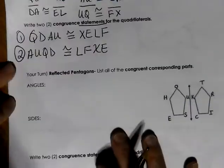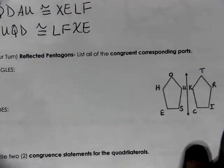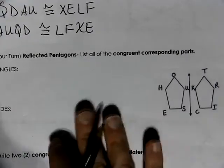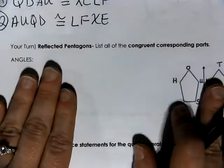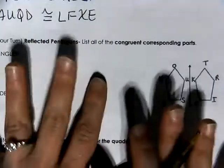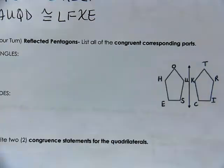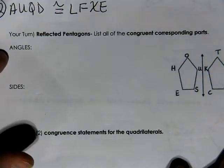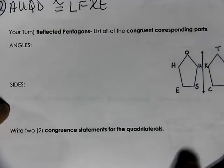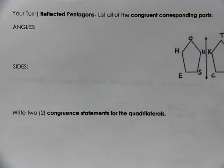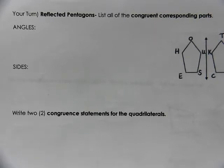Now it's your turn. We have reflected pentagons, so recognize that they are a reflection of each other. I want you to match and list the angles that are congruent, the sides that are congruent, and write two congruent statements. Please pause the video and see if you can do this on your own. When you have an answer, restart the video and we'll see how well you did.